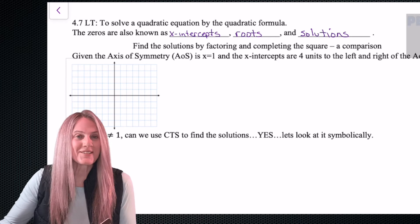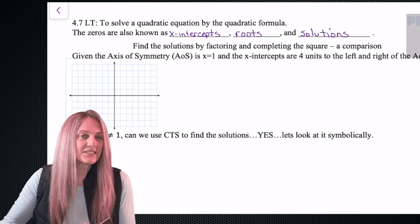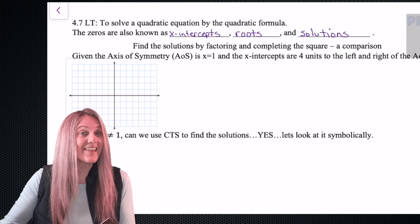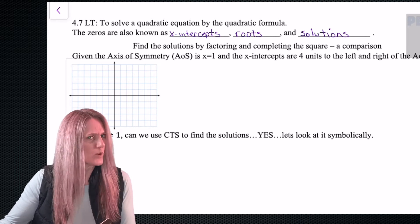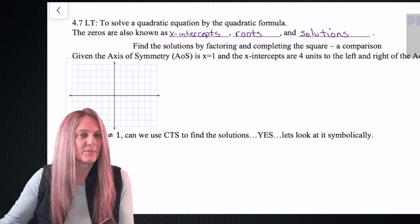Let's look graphically at a comparison between factoring and completing the square. We're given that we have an axis of symmetry at x equals 1 and that the x-intercepts or solutions happen to be four units left and right of the axis of symmetry.